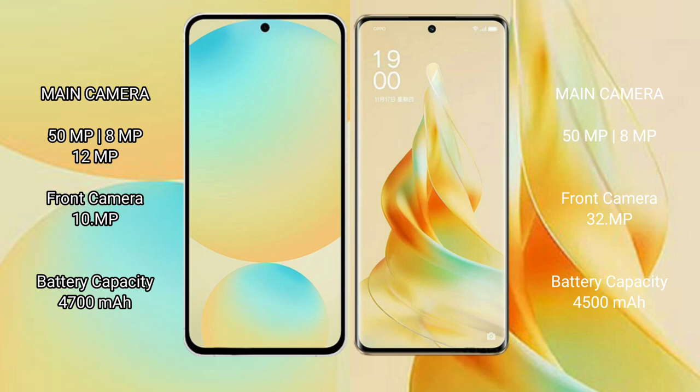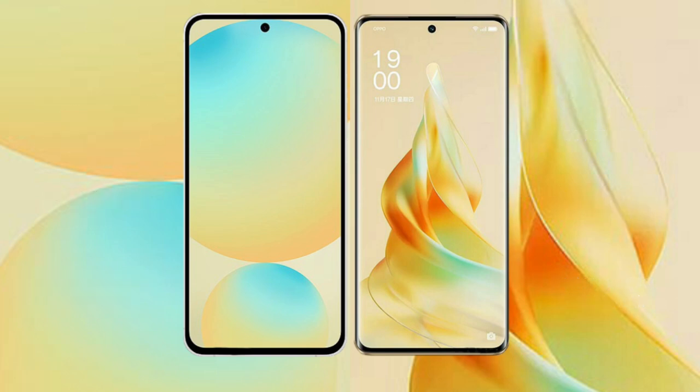The Samsung Galaxy S24 FE has a 4600mAh battery with 25W fast charging support. The Oppo Reno 9 Pro has a 4500mAh battery with 67W fast charging support.